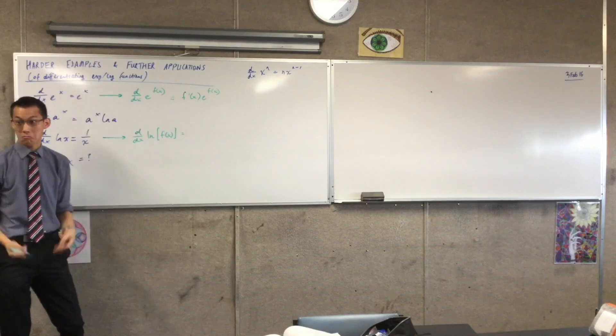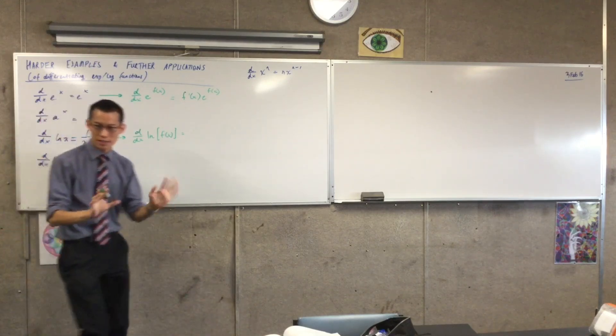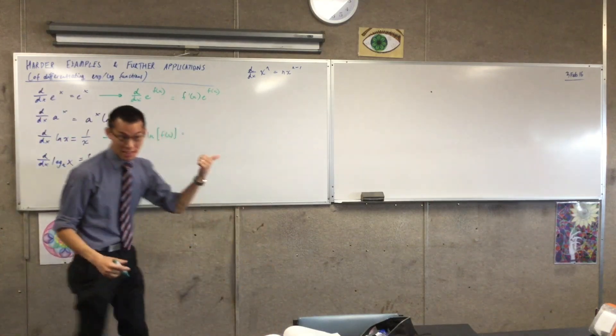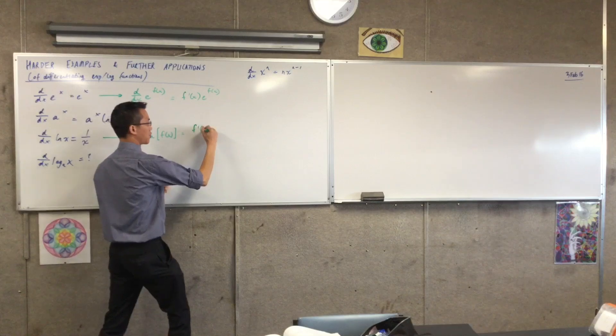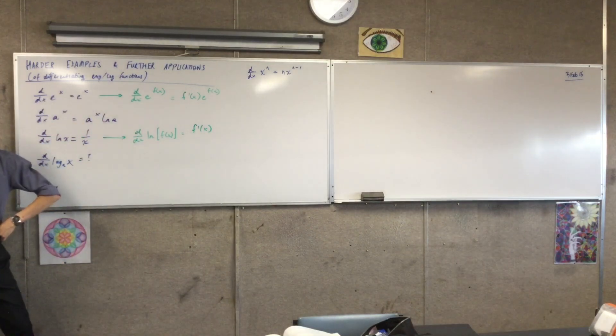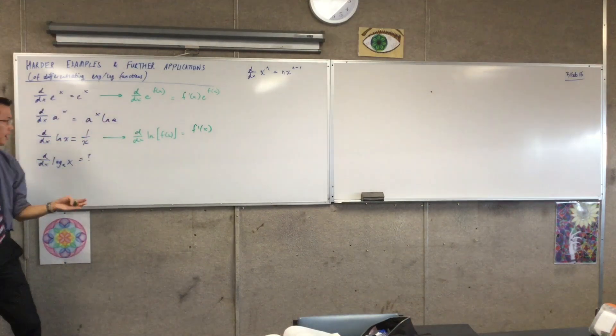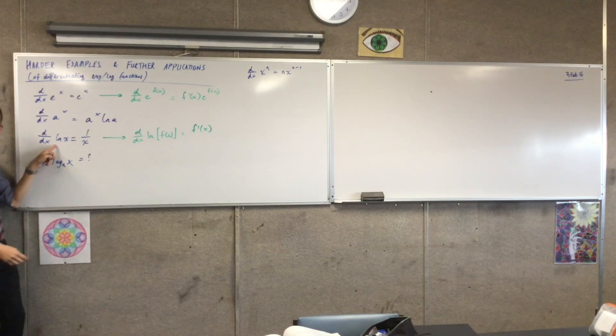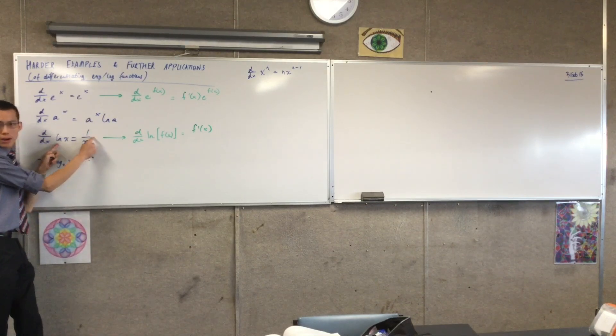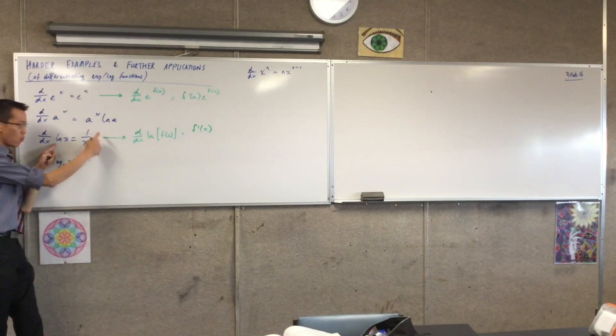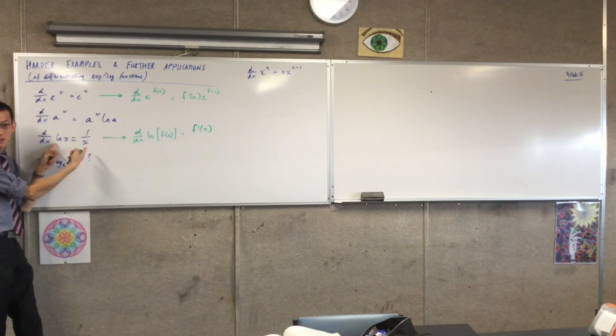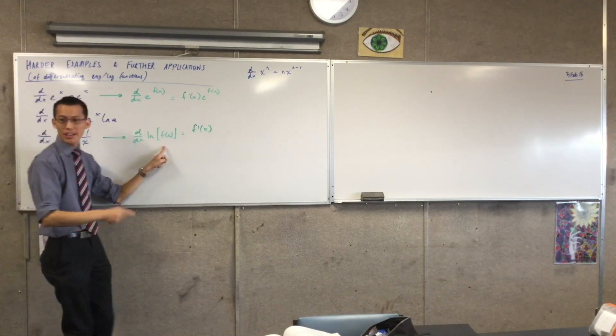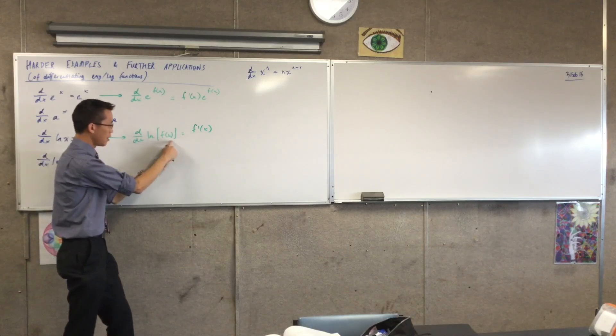So, the inside is just f dash, right? You don't need to do any, I mean, I don't actually know in this case what the function is, so I'll just call it f dash. Now, we're up to the part where you differentiate the outside part, that's a log function. When you differentiate a log function, you get 1 over whatever's in there, right? 1 over, in this case, x.